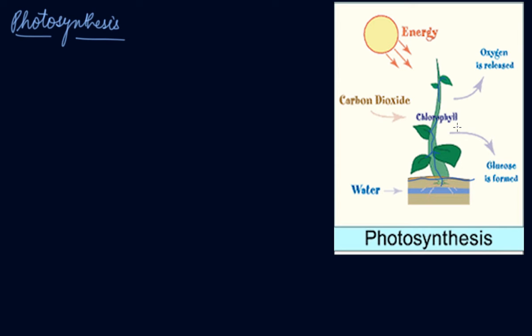Chlorophyll helps the leaves to capture the energy of sunlight. This energy is used to synthesize food from carbon dioxide and water. Since the synthesis of food occurs in the presence of sunlight, it is called photosynthesis.